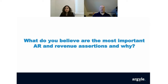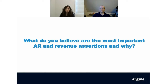Switching gears from cash going out to cash coming in: what are the most important AR and revenue assertions and why? The relevant AR and revenue assertions are existence, completeness, and accuracy. If we have not delivered something, we cannot book it in our books. You have to make sure we actually delivered a service, a license, or software before recording it. Completeness and accuracy is a theme valid across all audit procedures — all transaction recordings should always be complete and accurate, as this also drives your top-line revenue.